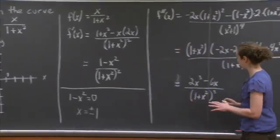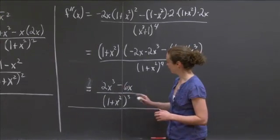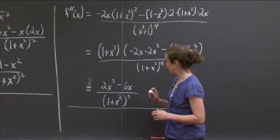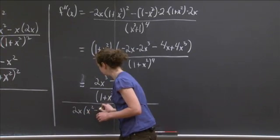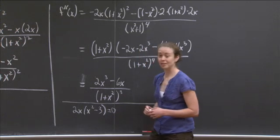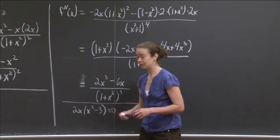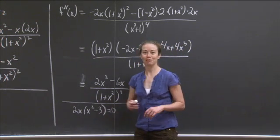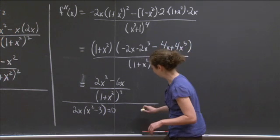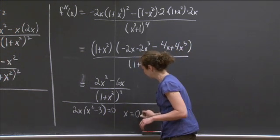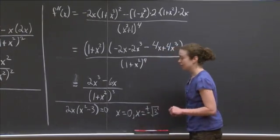Now let's look at when the second derivative is equal to 0, which again happens when the numerator is equal to 0. If we factor 2x cubed minus 6x, we get 2x times x squared minus 3 equals 0. This has three solutions: x equals 0, and x equals plus or minus root 3, which is between 1 and 2 — approximately 1.7. So we know we're interested in the points x equals 0 and x equal plus or minus square root of 3.